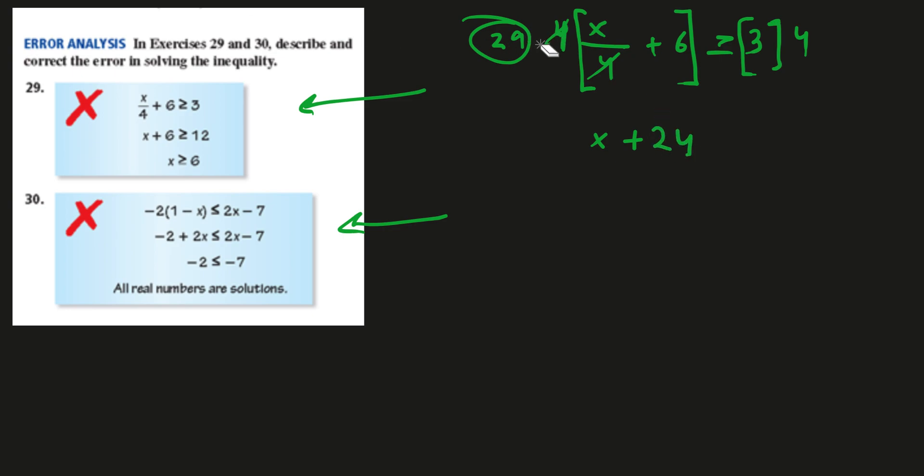So, x and then 24 is greater than or equal to 12. We can now subtract 24 to both sides of this equation here.